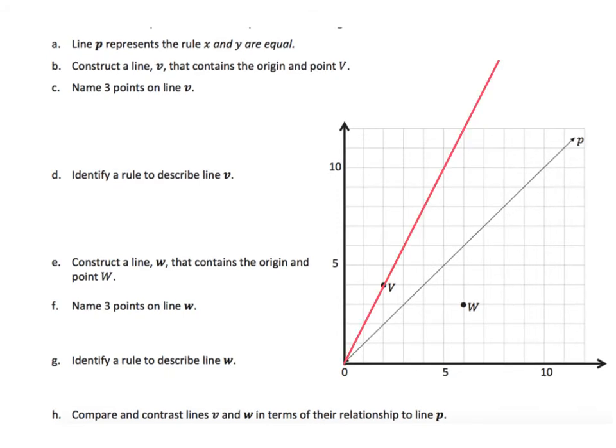Now, we must identify or name three points on line V. So, we can do that by just taking a look at that line and finding where it intersects various points. So, for example, when I have a 3, I have a 6. So, I could say 3 and 6. And when I have a 5, I have a 10. 5 and 10. And we can go one more 6 and 12. 6 and 12.